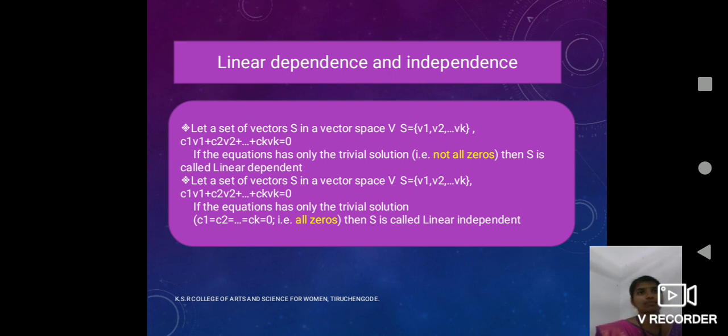Next, linearly dependent and independent. If V1, V2, etc. Vn, this collection of vectors belongs to the vector space V are said to be linearly dependent, then there exist scalars C1, C2, etc. Cn, not all zeros, such that the linear combination C1 V1 plus C2 V2, etc. plus Ck Vk which is equal to 0.